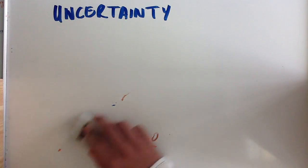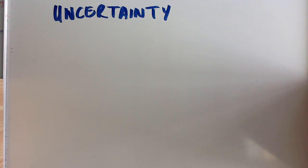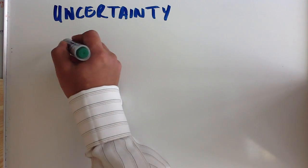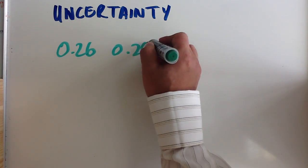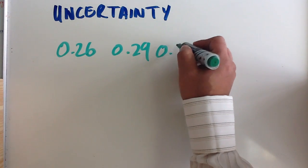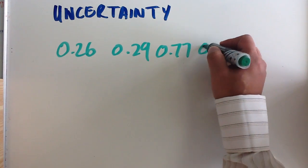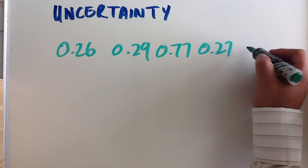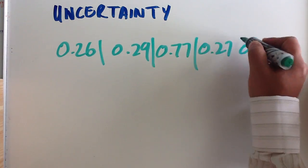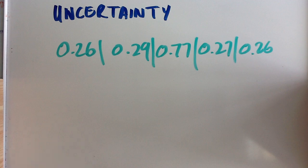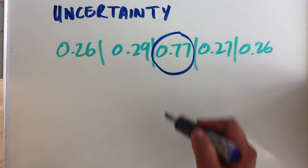If we've got a reading of, say, 0.26, 0.29, 0.77, 0.27, and 0.26, those are your readings. So you've got a set of readings. You can obviously immediately spot that there is an anomalous data point there.